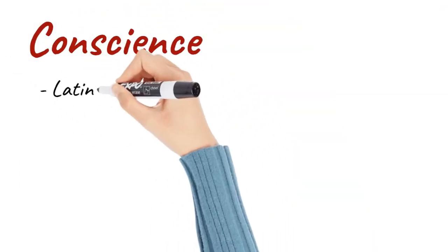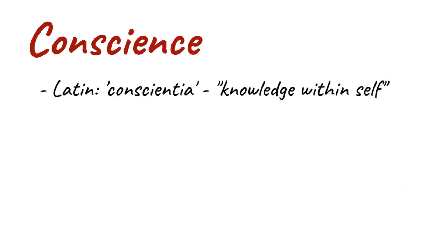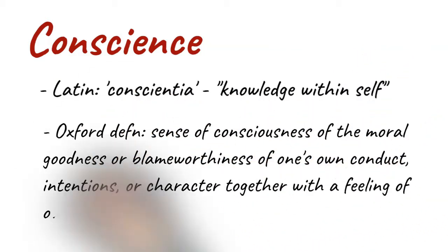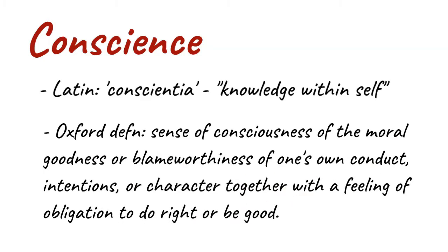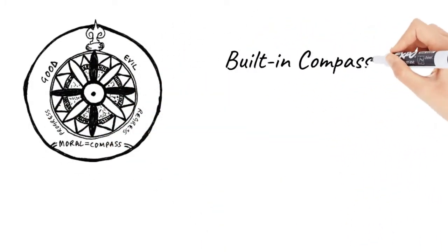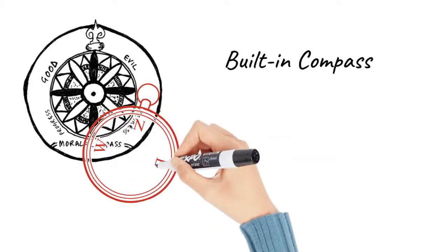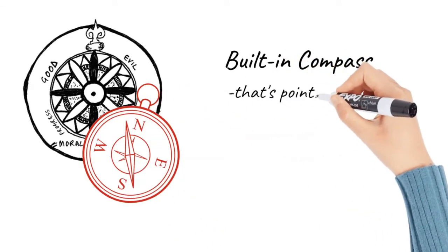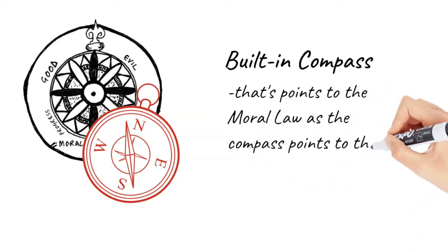Conscience comes from the Latin word conscientia, meaning knowledge within self. In the Oxford definition, it's a sense of consciousness of the moral goodness or blameworthiness of one's own conduct, intentions, or character, together with the feeling of obligation to do right or to be good. Apart from inner voice, another way of describing the conscience is as a built-in compass. Like a compass which always points north, the conscience points to the moral law. If the compass was broken, the navigator will never find his way. In the same way, if the conscience is deformed, one will never know right from wrong.